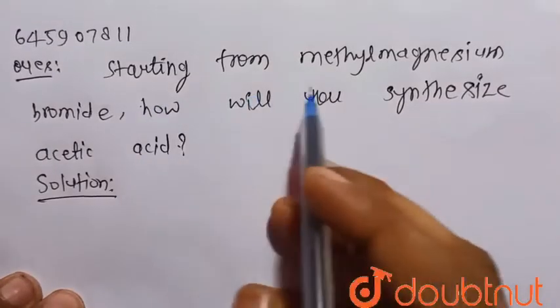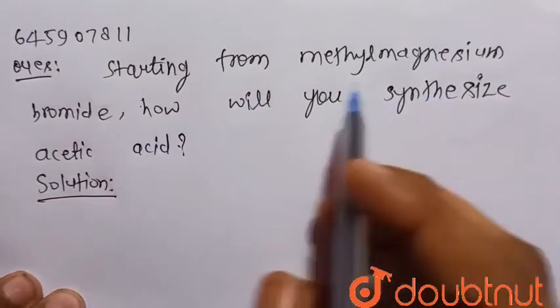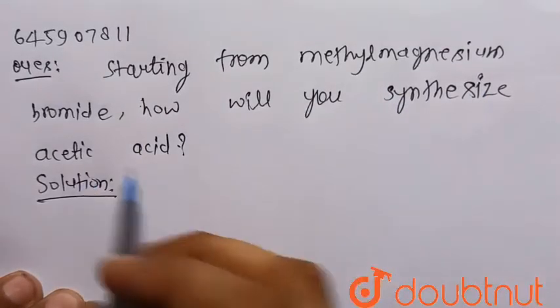Hello everyone, consider the given question: starting from methyl magnesium bromide, that is the Grignard reagent, how will you synthesize acetic acid?